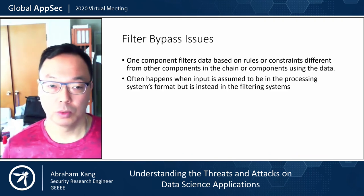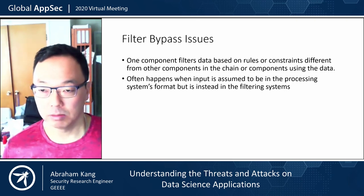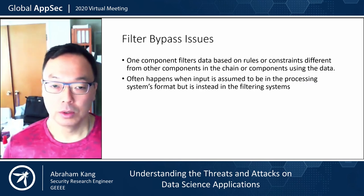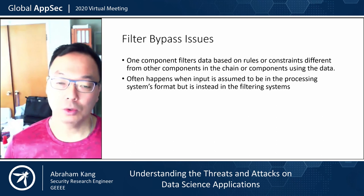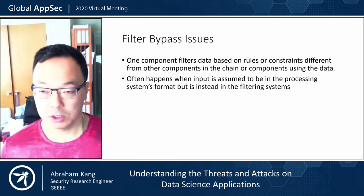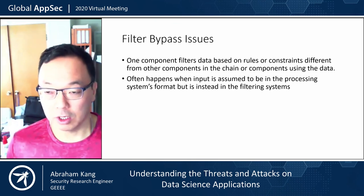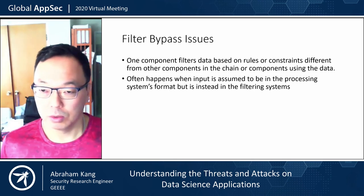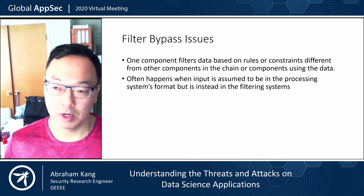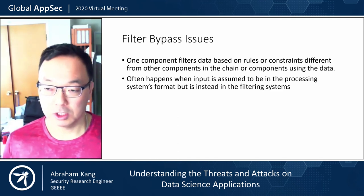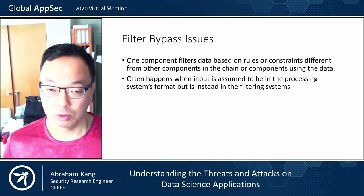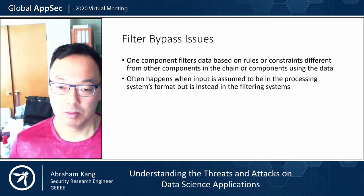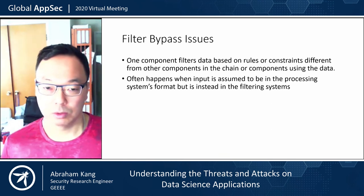We also have filter bypass issues. You have different processing components that can be chained together and reused, and they make certain assumptions about the rules or constraints on their data. When you have different rules or constraints between components in a chain, you're going to find security vulnerabilities — you see this often in HTTP request smuggling, cache poisoning, or HTTP parameter pollution. Basically, you've got a chain of components operating on data with different assumptions, and this mismatch allows you to get around certain filters.